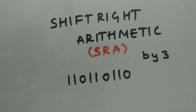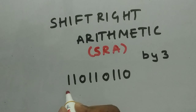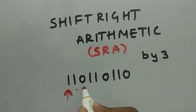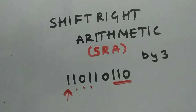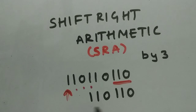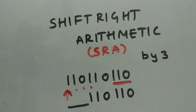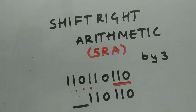Now let's go to shift right arithmetic by three, using the same bit pattern. We move the bits right by three positions — one, two, three — the MSB bits come over, and the three LSB bits are thrown out. In the logical case we added zeros, but in arithmetic the sign plays an important role, so we need to take care of the sign.